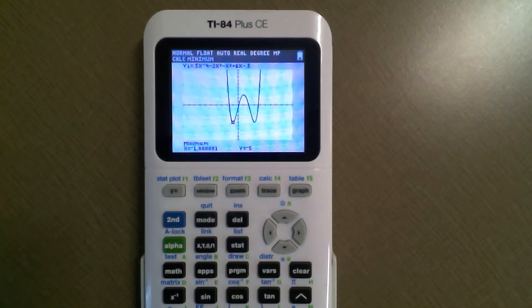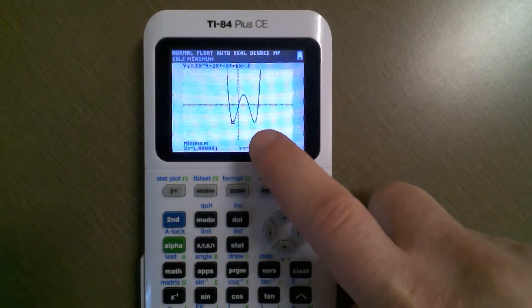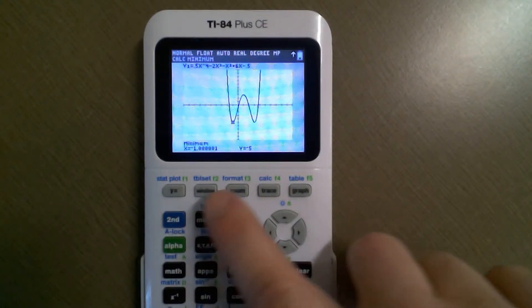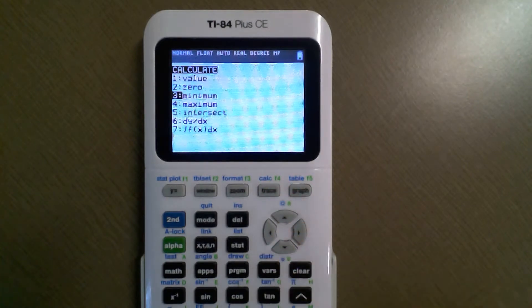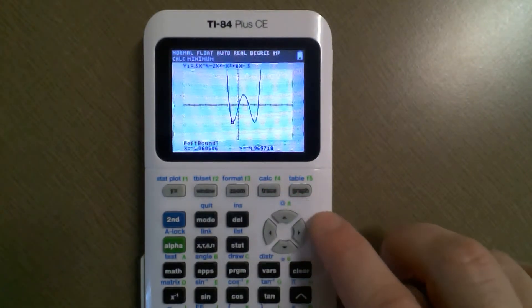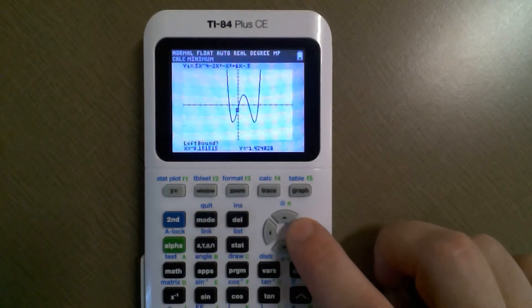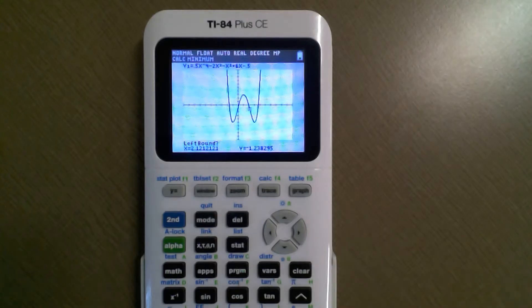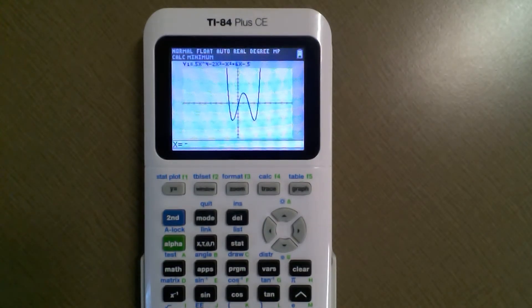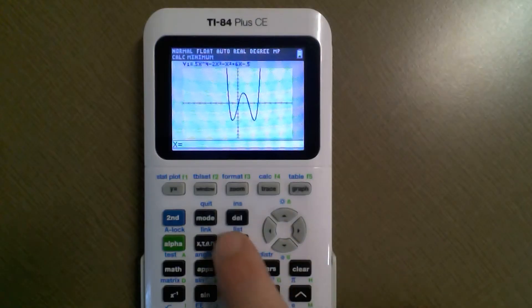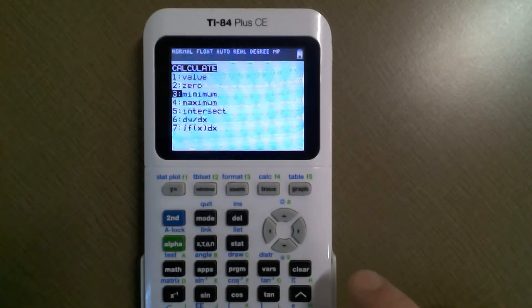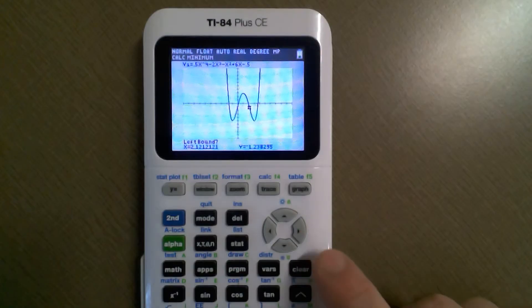We go second trace, go to minimum, hit enter. When it says left bound we want to make sure we're on the left of that other minimum. I'm on the left, I'm going to hit enter. Oh I hit the wrong button, let's go back and do that again. Second trace minimum, I'm on the left of that minimum, there we go I hit enter this time.